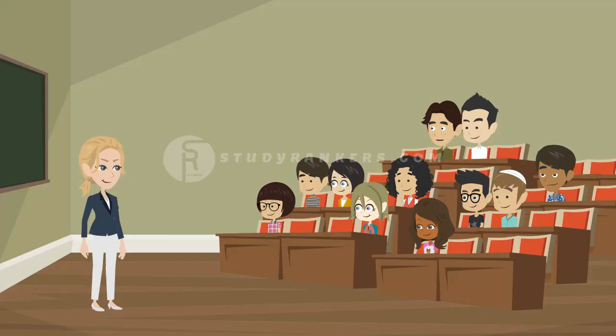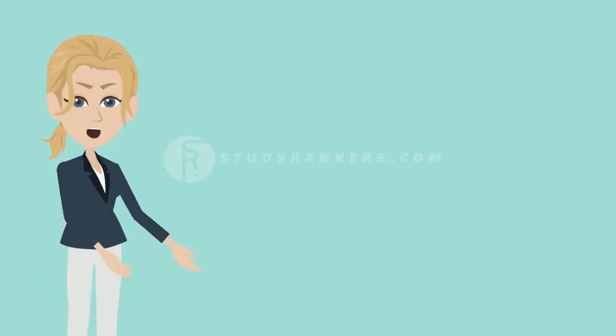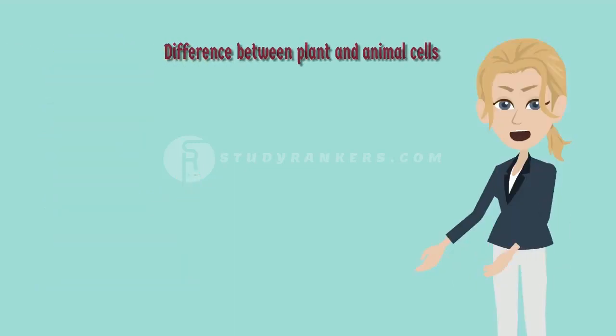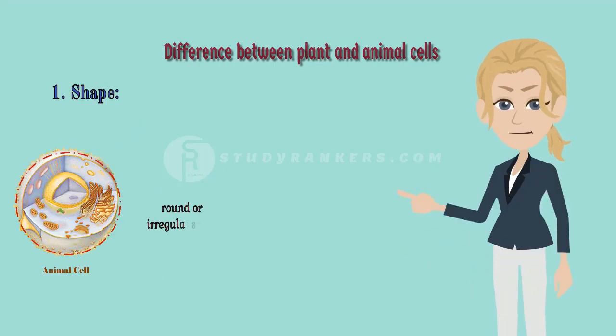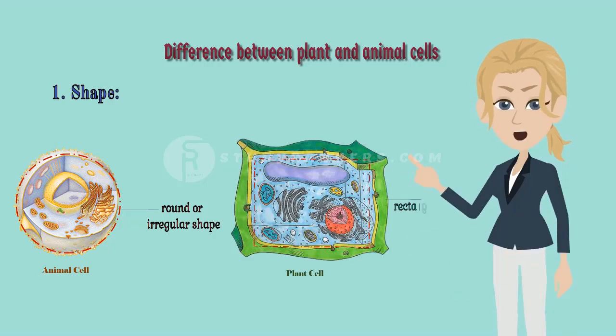How can we signify these two cells? Good question. There are certain characteristics of both, plant and animal cells, which signify it. Plant and animal cells have several differences and similarities. Now, we are going to discuss about the difference between plant and animal cells. They are, first one is shape. Animal cell looks like round or irregular shape. Whereas, plant cells are rectangular shape.